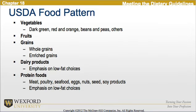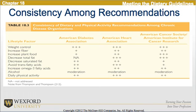The USDA food pattern includes vegetables such as dark green, red and orange, beans and peas; fruits; grains including whole grains and enriched grains; dairy products with emphasis on low-fat choices; and protein foods such as meat, poultry, seafood, eggs, nuts, seeds, and soy products, again with emphasis on low-fat choices. Table 18.3 shows the consistency among the recommendations.